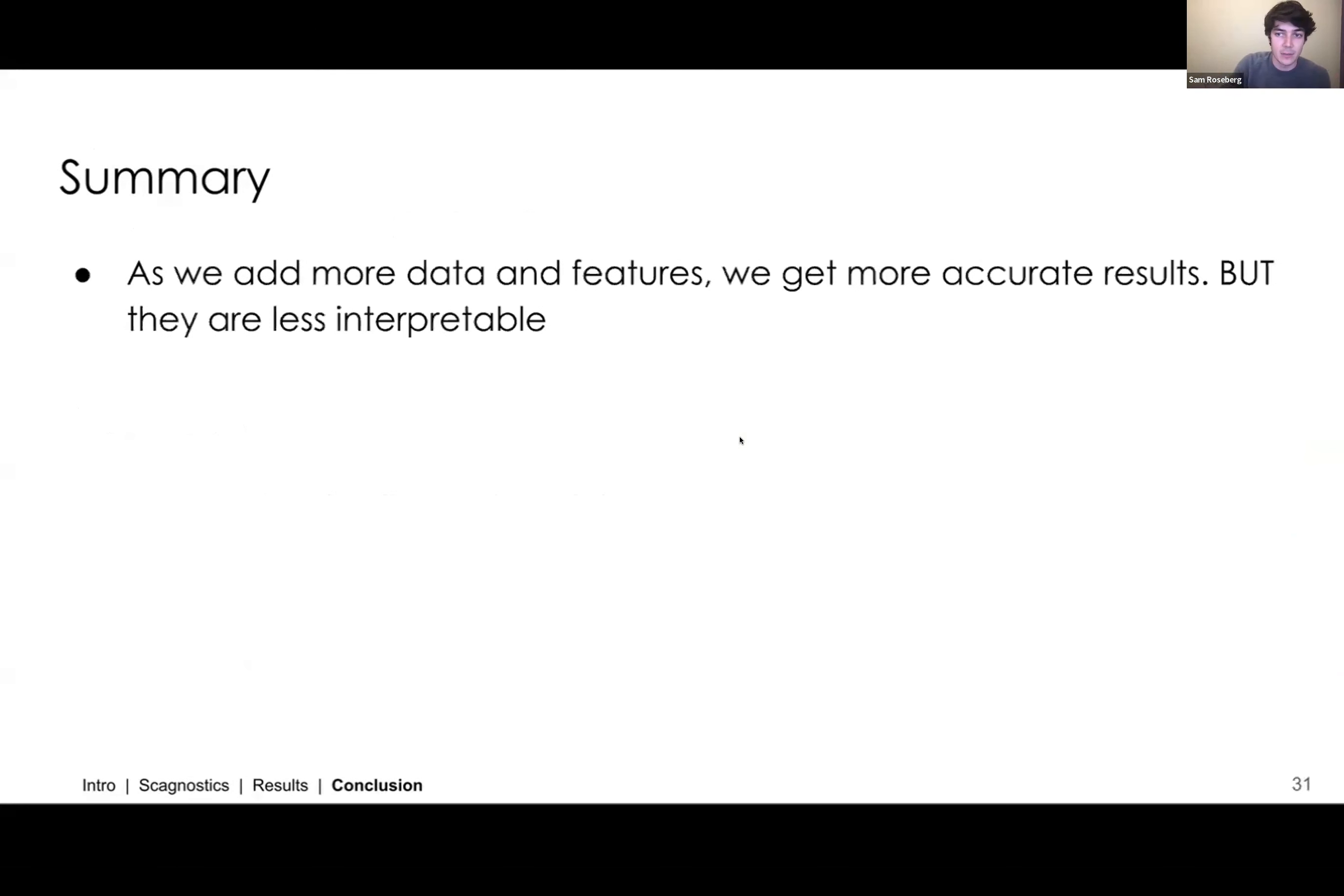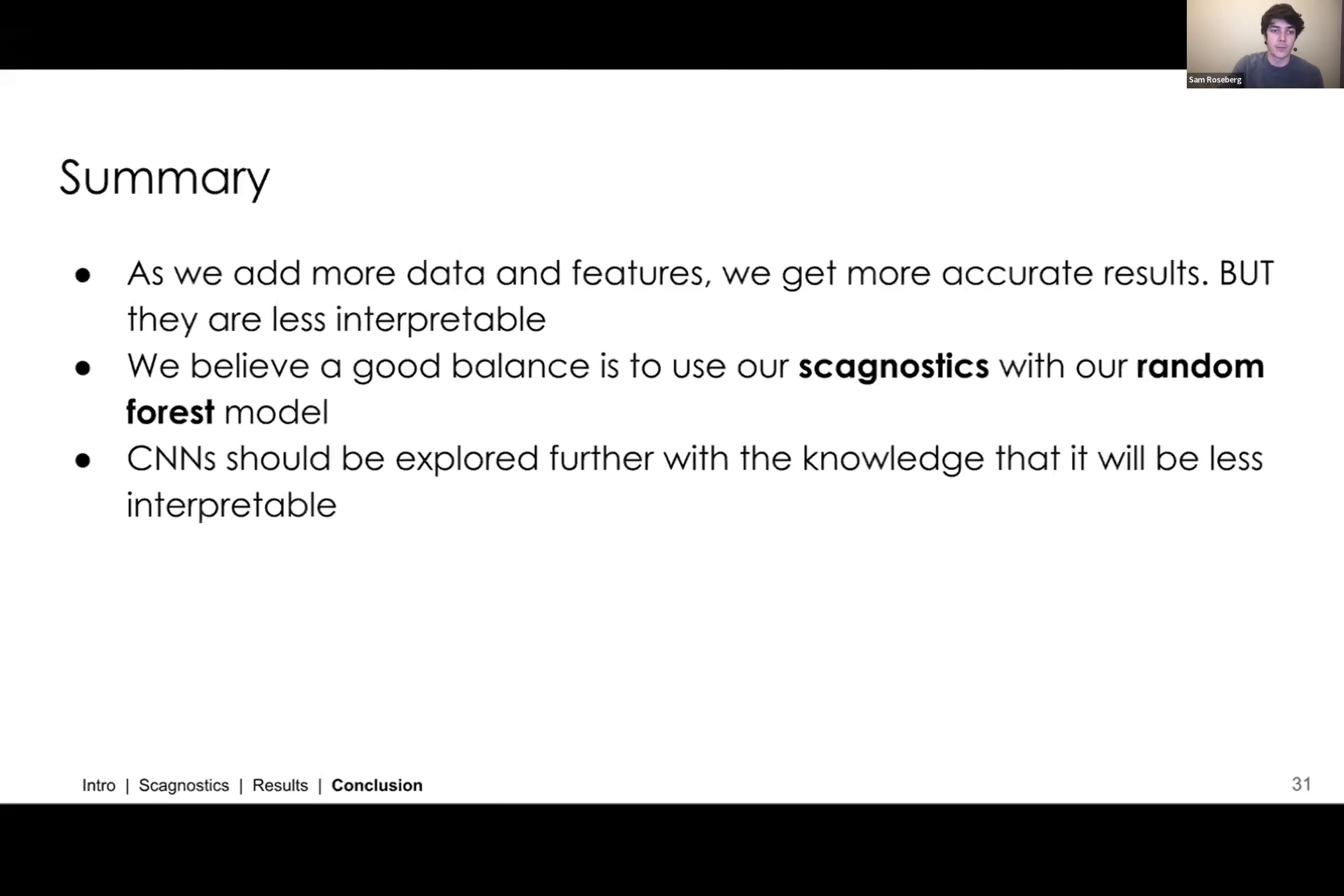So finally, in summary, as we add more data and features, we find that we get more accurate results, but also that those results become harder to interpret. We believe there's a good balance to use our scagnostics with a random forest model, although that random forest model, while increasing accuracy, does restrict our ability to interpret our results. And while you may be thinking throughout this presentation, why not use a convolutional neural net? If you read the paper, we have some exploration of those topics. And we find that while they do have the ability to potentially be more accurate, they also lose the interpretability that these calculatable scagnostics consist of. And finally, there are promising applications in at least the residual space in the modeling and research that we've done.